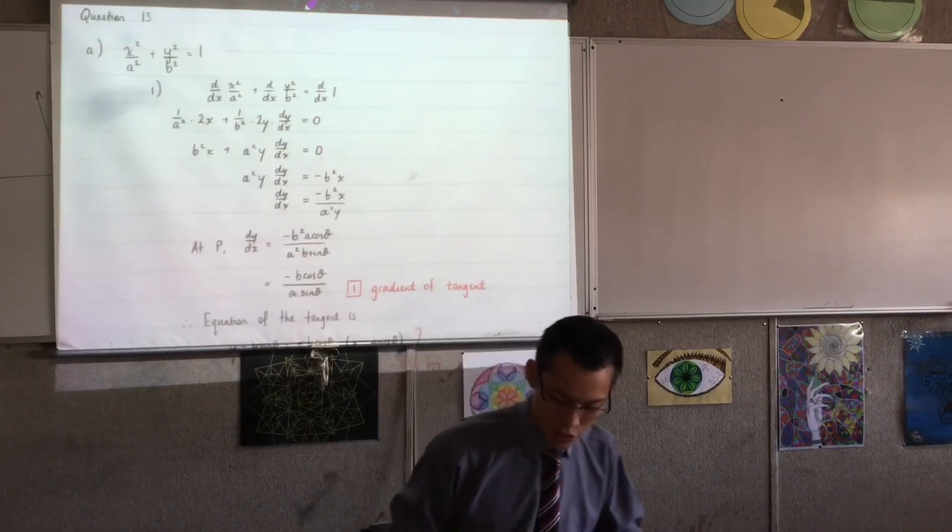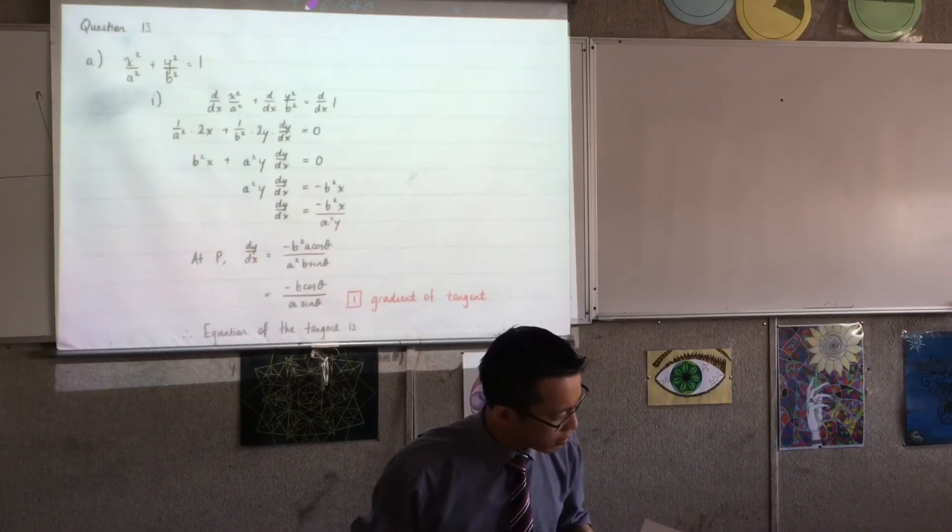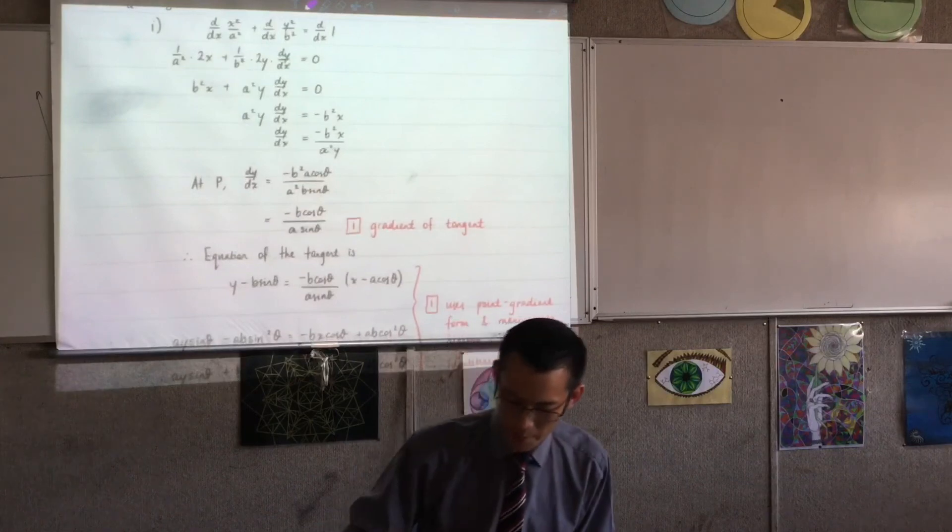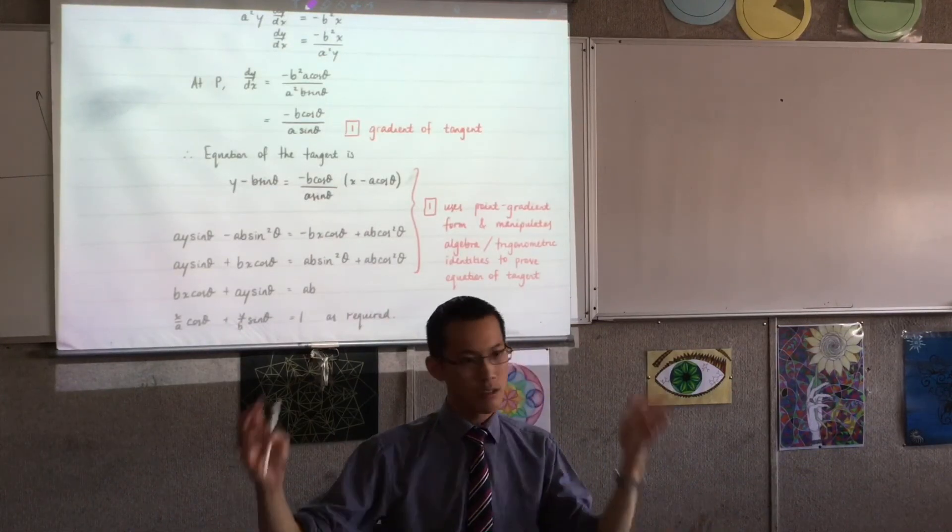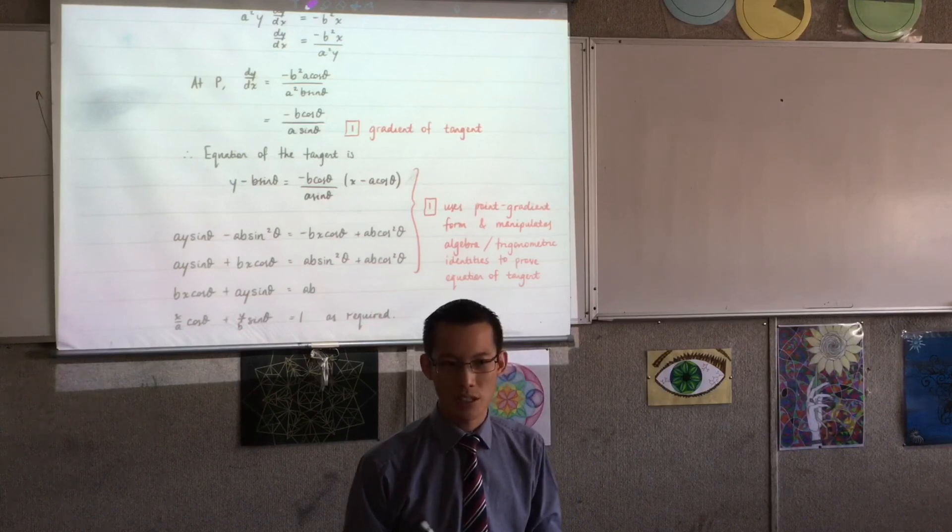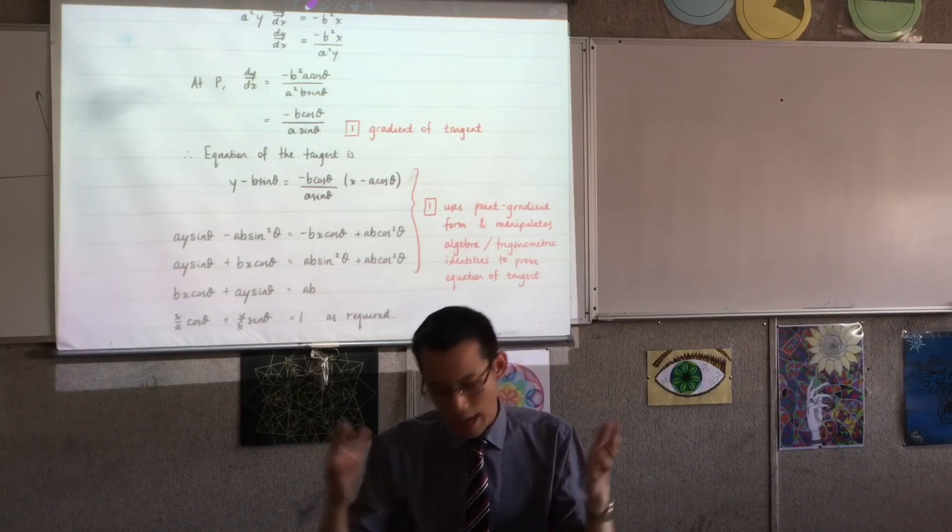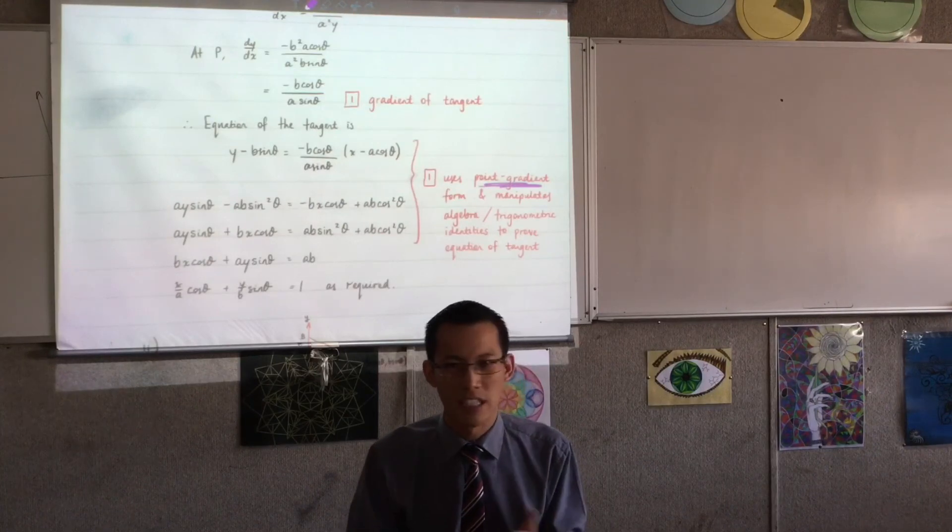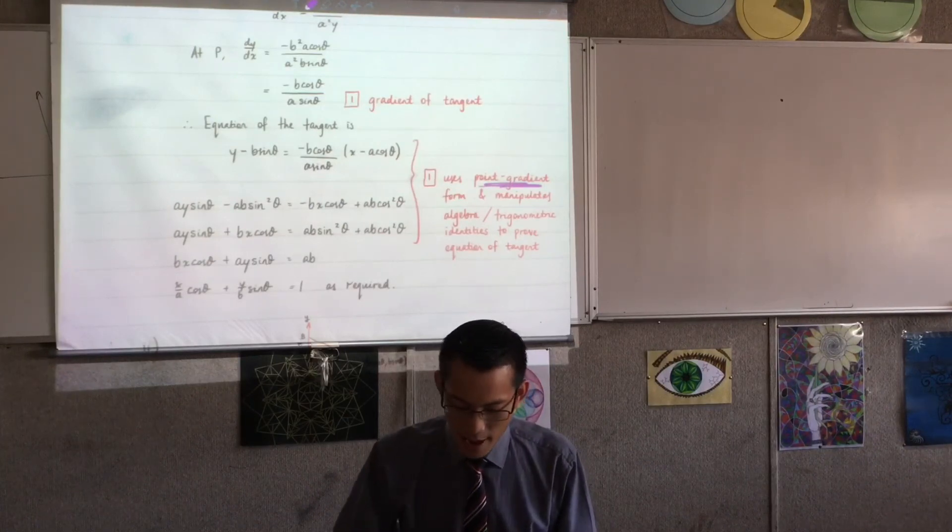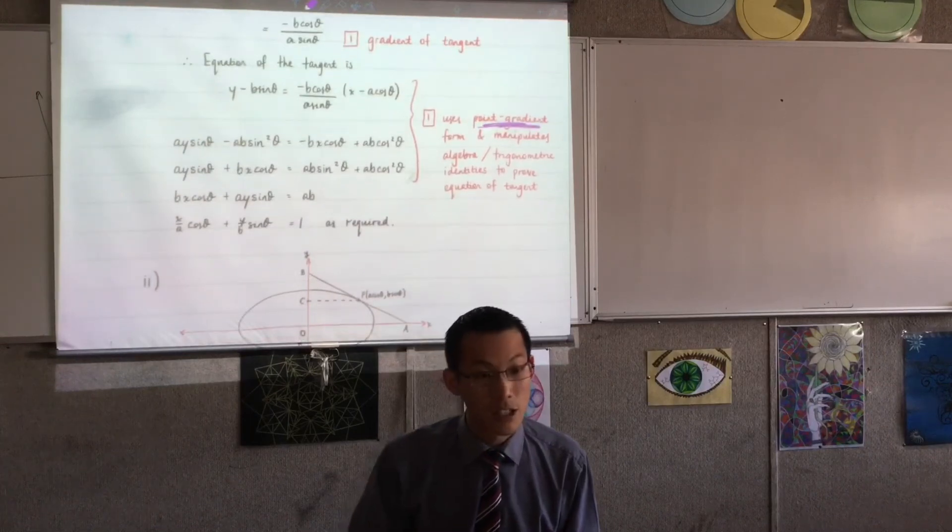Question 13. Now let me just pause. It's 13B that I'm talking about. First mark for getting the gradient of the tangent. It's a show question. You guys know none of the parametric equations on the conic are quotable. So you had to do this. And the second mark was for using some kind of point-gradient form. You really need to say something like that and getting to the result.